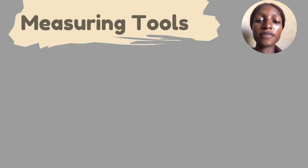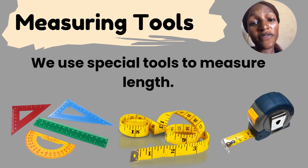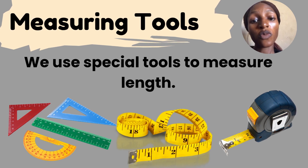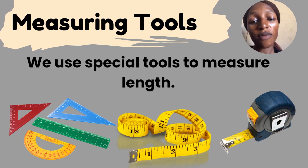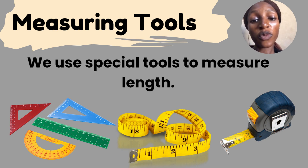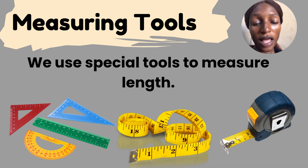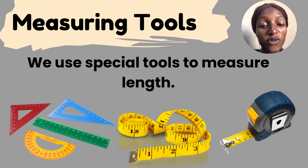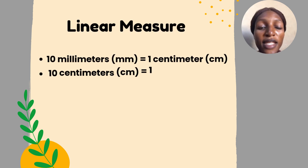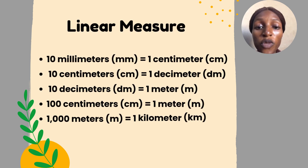We have different measuring tools. We use special tools to measure length. As you can see, the set square and ruler — you can see them in your math set — and we have the tape rule and the measuring tape that carpenters use to measure. These are linear measurements; we use them in measuring length.